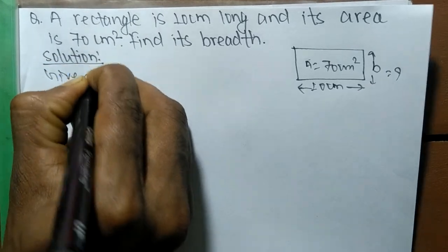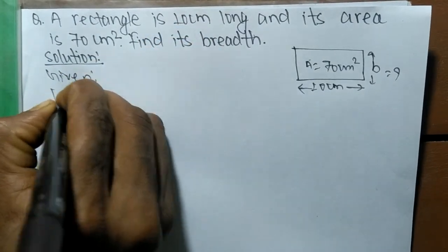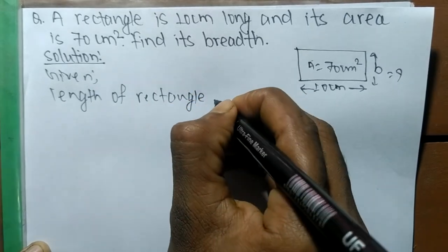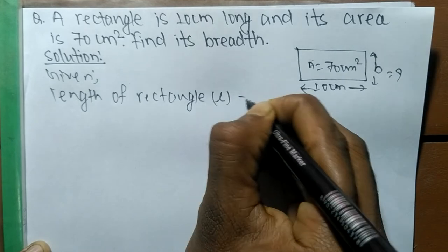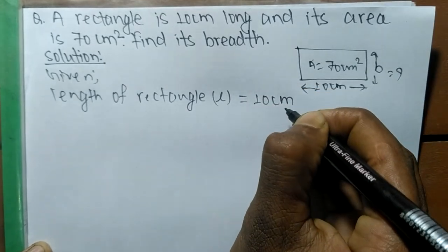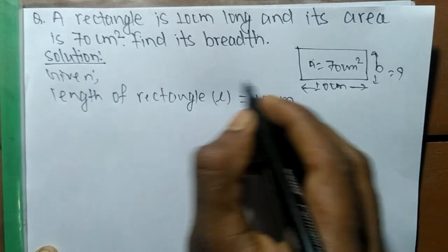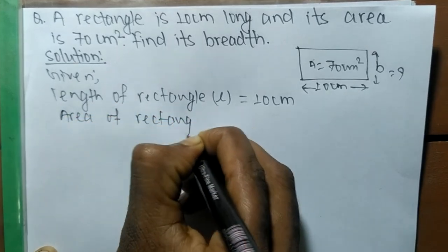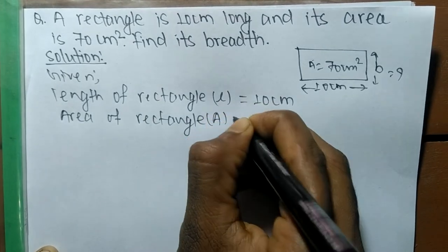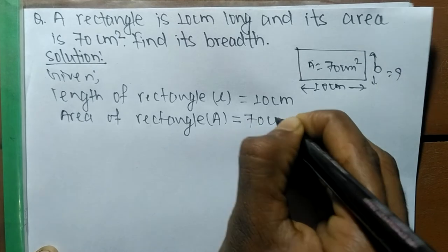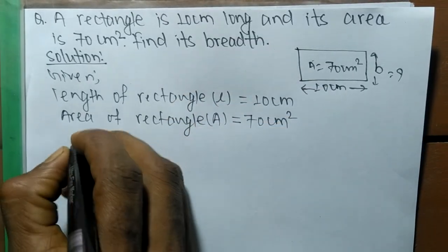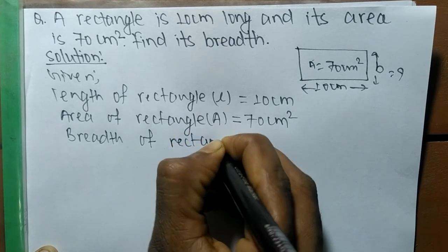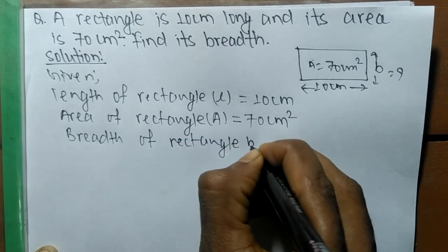To solve it, first of all we write down what is given. We have the length of the rectangle, which we denote by L, equal to 10 centimeters. We also have the area of the rectangle, which we denote by A, equal to 70 centimeters square. We have to find the breadth, which we denote by B.